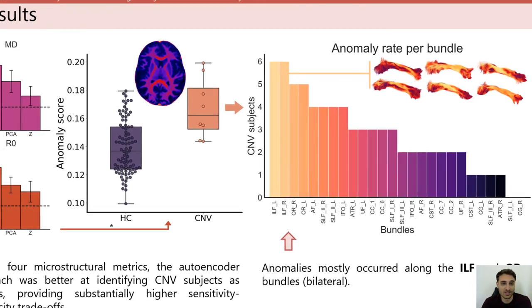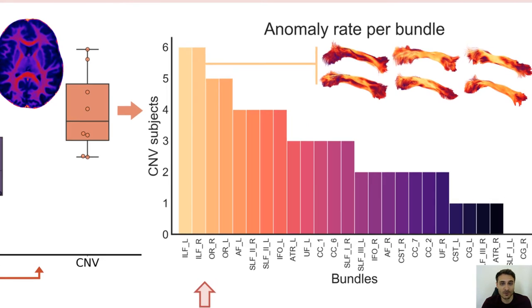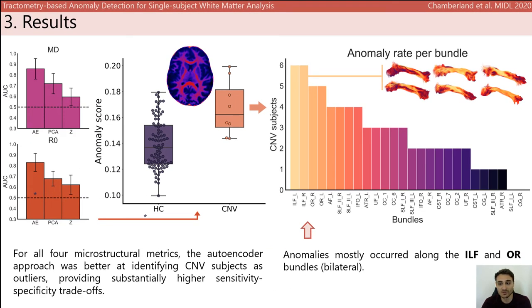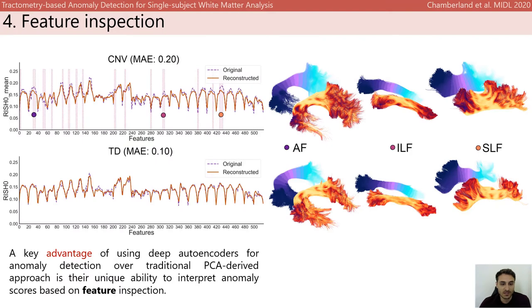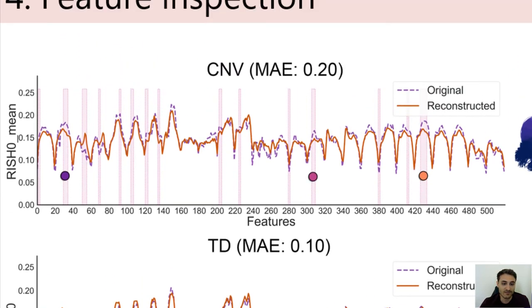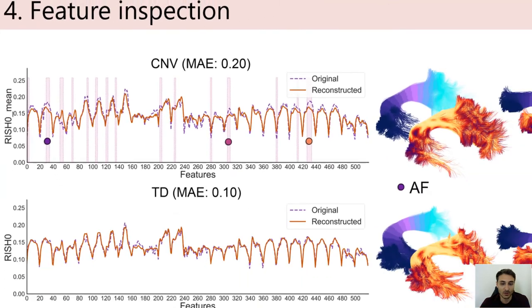A closer look into the anomaly scores showed that most of them occurred along the inferior longitudinal fasciculus and the optic radiations, which are two association bundles that run into the temporal occipital loops. A key advantage of using deep autoencoders for anomaly detection over traditional PCA-based approaches is their unique ability to interpret anomaly scores based on feature inspection. If we look at a typically developing subject, the overall reconstructed features match very well the input. In the CNV subject, we see various discrepancies highlighted along multiple tracks.